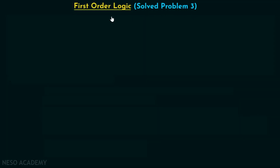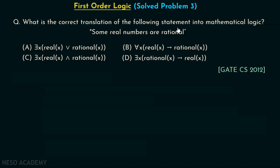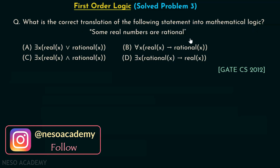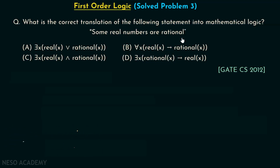Let's discuss solve problem 3 on first order logic. What is the correct translation of the following statement into mathematical logic? The statement is: some real numbers are rational. Your job is to convert this sentence into its equivalent logical expression. You need to find the correct option for this particular statement. This question has been asked in GATE CS 2012. I would encourage you to pause the video and try to answer this question on your own.